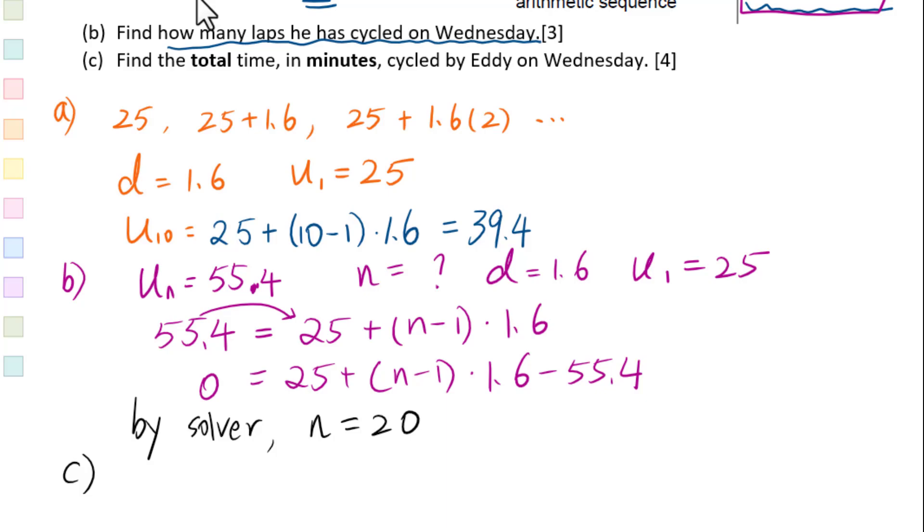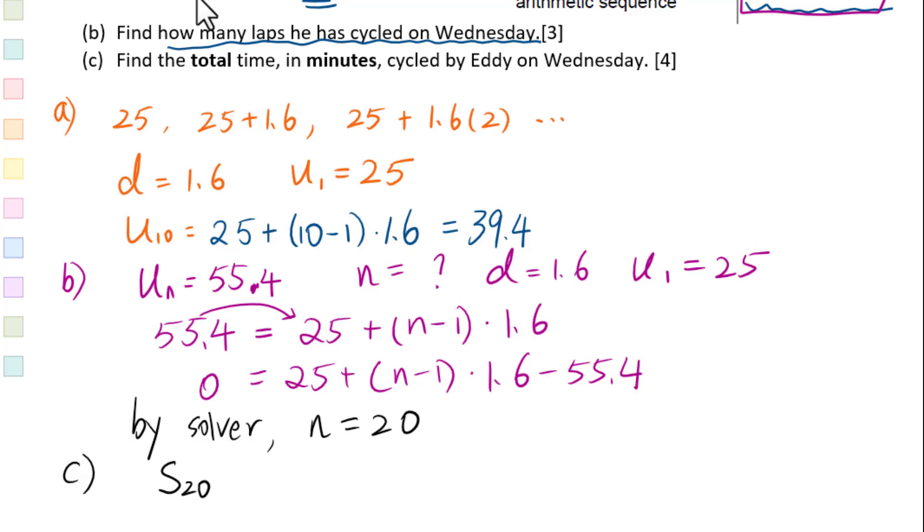C. Find the total time in minutes cycled by Eddy on Wednesday. Basically, we are looking for S sub 20. Since we already know U sub 1, D, and also n, we will use this formula. S sub 20 equals 20 over 2 of 2 times U sub 1 is 25 plus 20 minus 1 is 19.